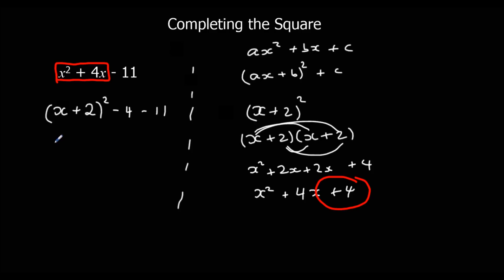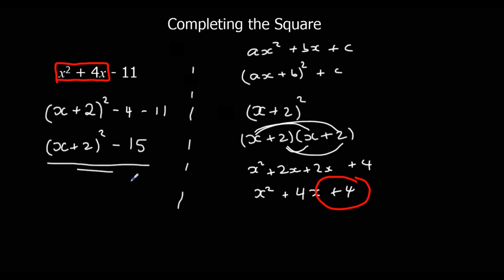So that simplifies to x plus 2 squared minus 15. And that is completing the square — that's what we wanted. We've got something squared and we've got a minus number on the end.